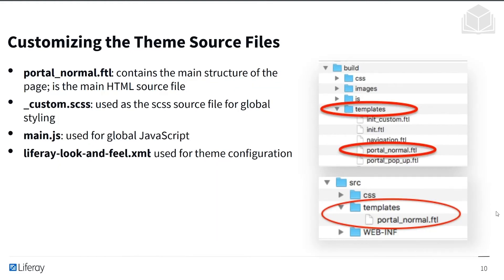After generating a theme, we'll need to customize the source files. Portal Normal FTL is the FreeMarker template containing the main structure of the page — the main HTML source file. If we want something in a different location or removed, we modify it here. Underscore custom SCSS is the styling source file for all global styling, such as global font size or font changes. Main.js is used for global JavaScript — helpful functions or code that runs on page load. Finally, the theme configuration file is Liferay look-and-feel XML.